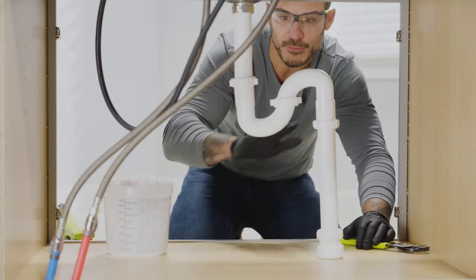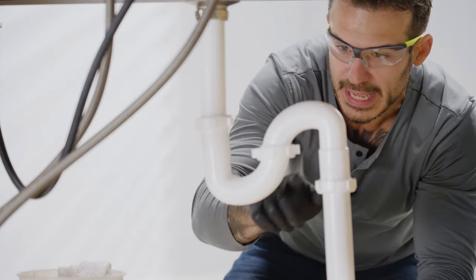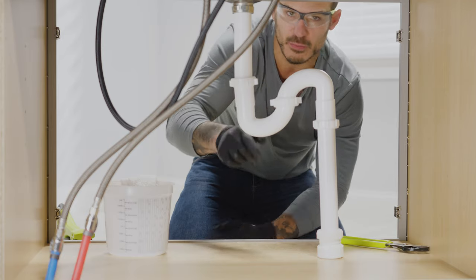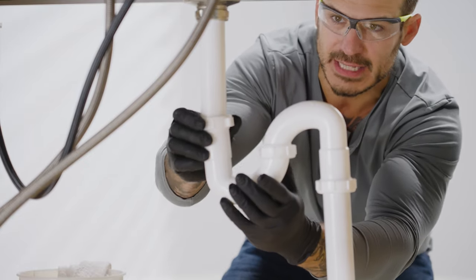Alright, so we're here under our sink, and for the 99% of the problems that happen with clogged drains happens in this area right here, the P-trap. What happens is anything that comes through the drain gets caught, whether it be toys, hair, or jewelry. So let's disconnect it and see how it's looking.